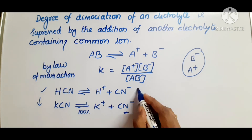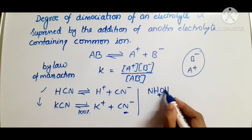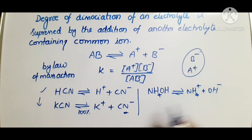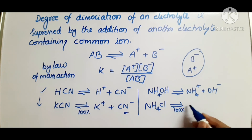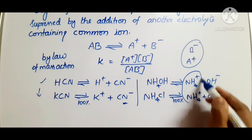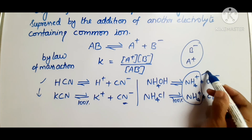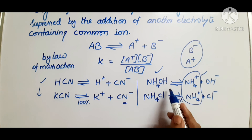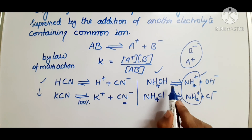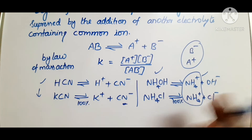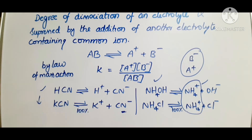Another example: NH₄OH is a weak base that dissociates into NH₄⁺ and OH⁻. When the strong electrolyte NH₄Cl is added, it provides NH₄⁺ and Cl⁻. NH₄⁺ is the common ion, so the excess NH₄⁺ reacts with OH⁻ and drives the equilibrium backward, suppressing dissociation of NH₄OH. This demonstrates the common ion effect.